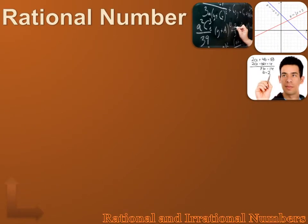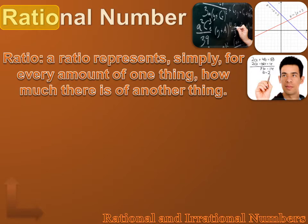Let's start by talking about rational numbers. What's a rational number? Is it a number that uses good judgment? No, no, the word rational number comes from the word ratio. A ratio represents, in a simple form, for every amount of one thing, how much there is of another thing.